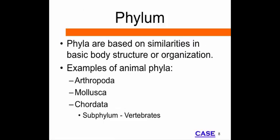At the phylum level, animals are grouped together based on similarities in basic body plan or organization. For example, organisms in the phylum Arthropoda have external skeletons and joined bodies and limbs. Insects, spiders, lobsters, and crabs are arthropods.